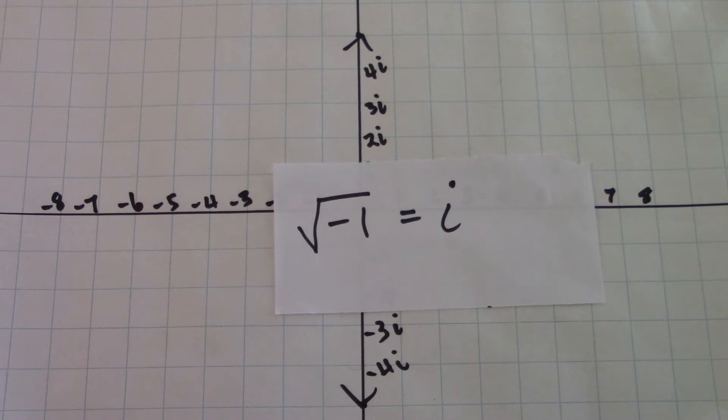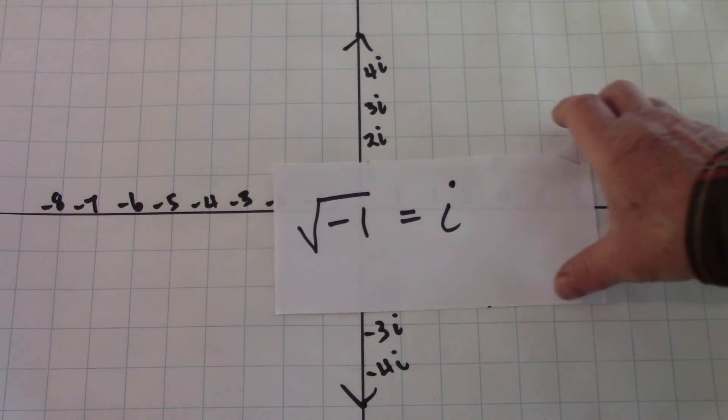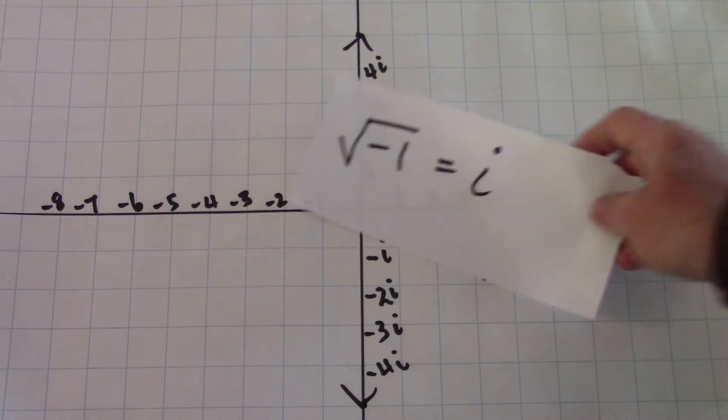By the 1830s, with Carl Gauss's paper regarding square root negative one, these imaginary numbers, Gauss called them complex numbers, they began to take their place in our understanding of numbers.